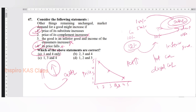Sir, last one minute. The 55th is the last. Demand-pull inflation - which of the following causes demand-pull inflation? Because of the people, not because of the government.